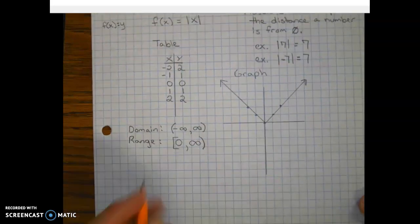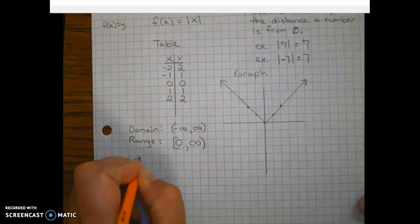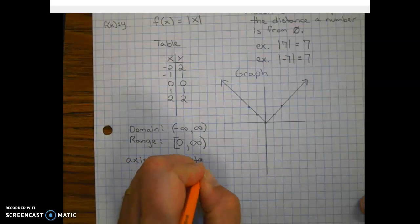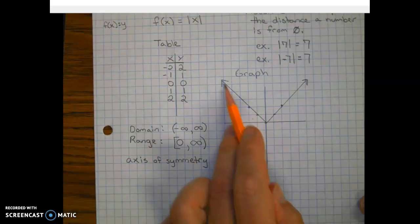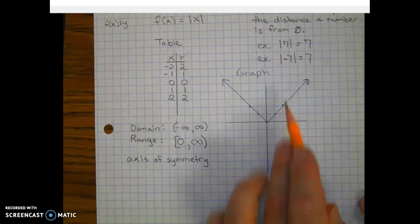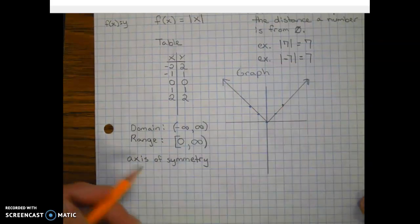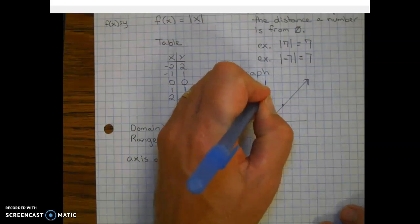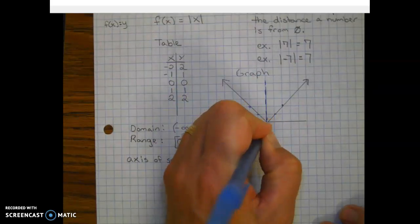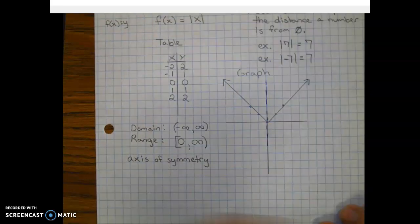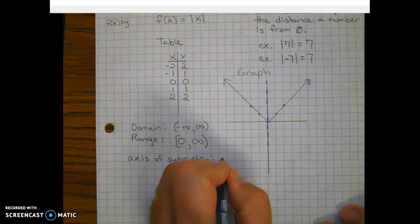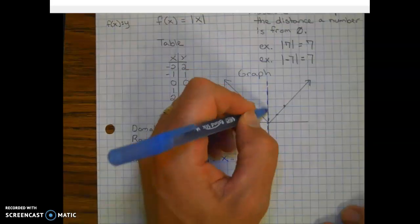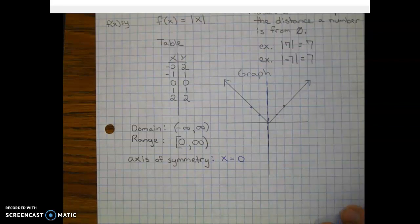The next key feature we have here is axis of symmetry. A lot of this is very similar to quadratic, except instead of a parabola, we have a v. And it's symmetrical on both sides. So our axis of symmetry is going to be that line that goes directly through the middle. And the axis of symmetry in this case is going to be x equals—and it goes through zero. So that is our axis of symmetry, x equals zero.